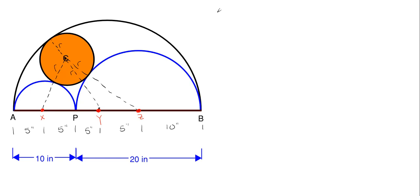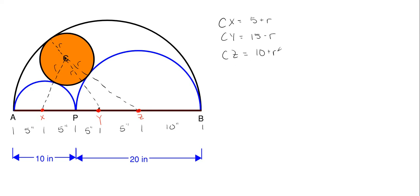Writing all that out based on the picture and dimensions: CX = 5 + R, CY = 15 − R (radius of the large semicircle is 15, subtract R to reach center C), and CZ = 10 + R. Additionally, X to Y = 10 inches and XZ = 15 inches, just from the given dimensions.